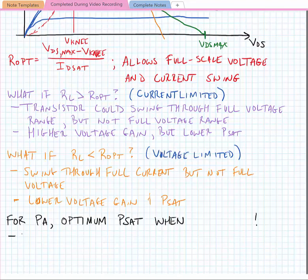So for a PA, the optimum P_SAT is achieved when the load resistance R_L is equal to that optimum load line curve.